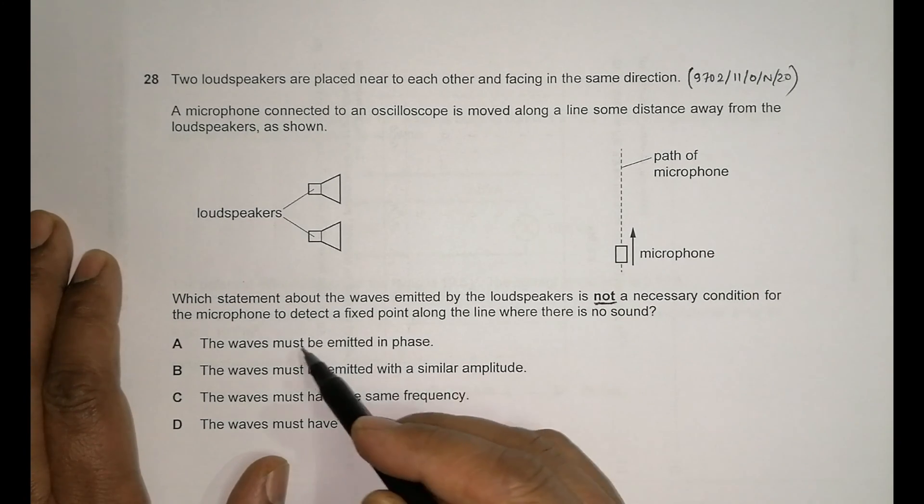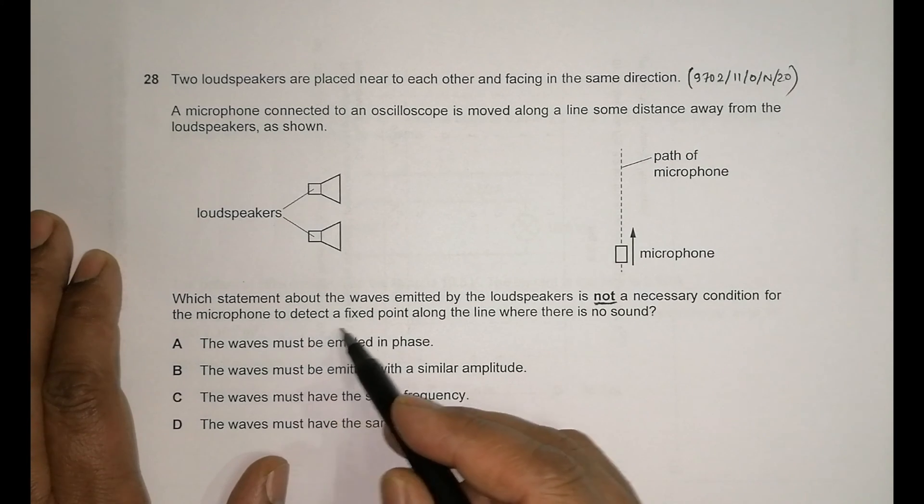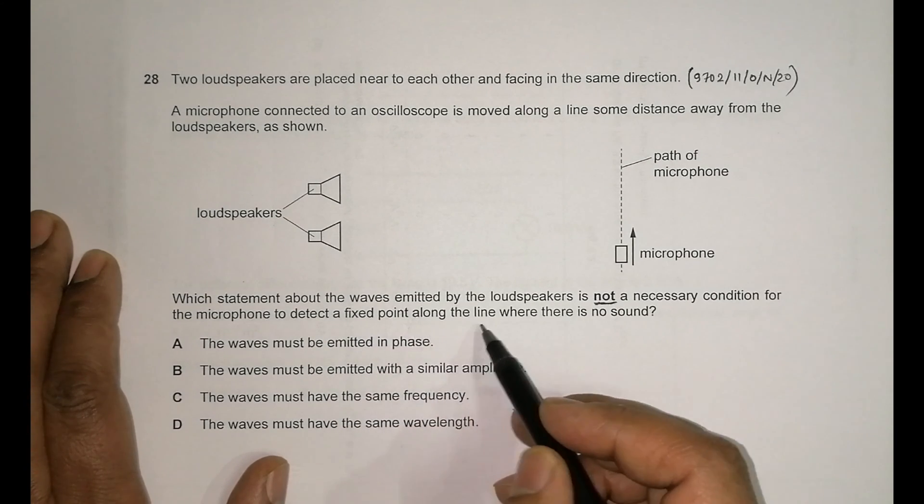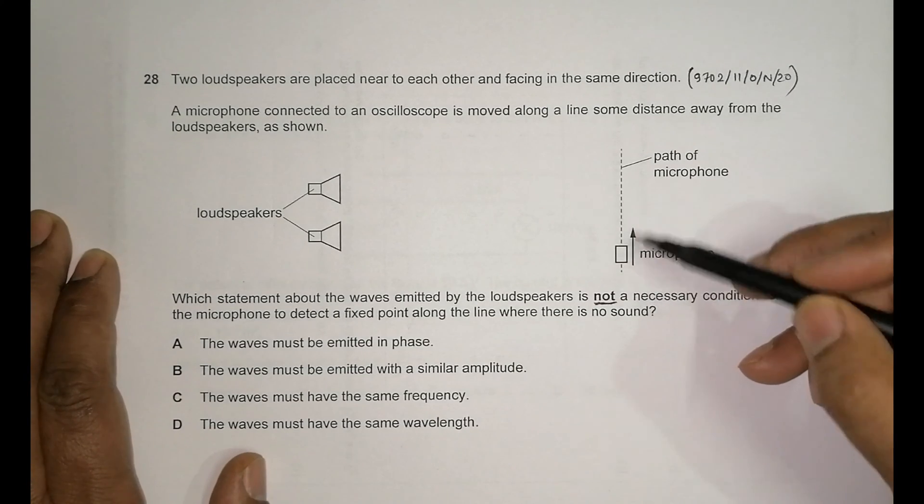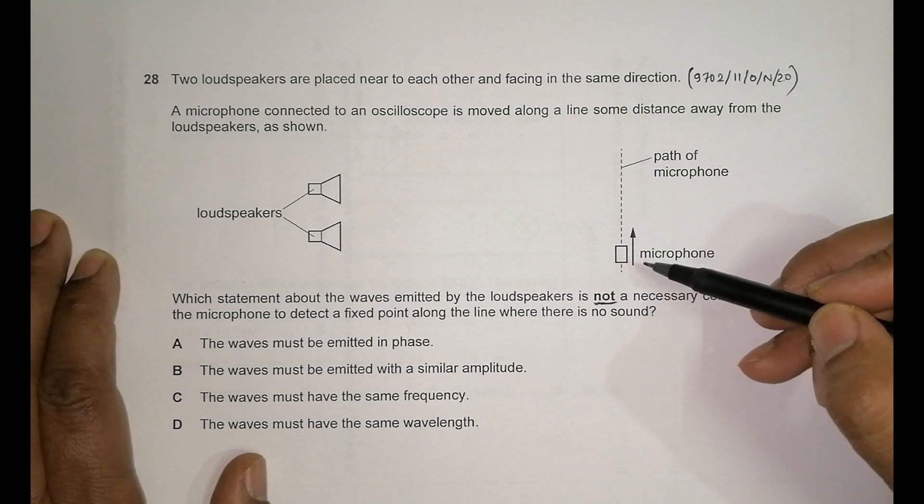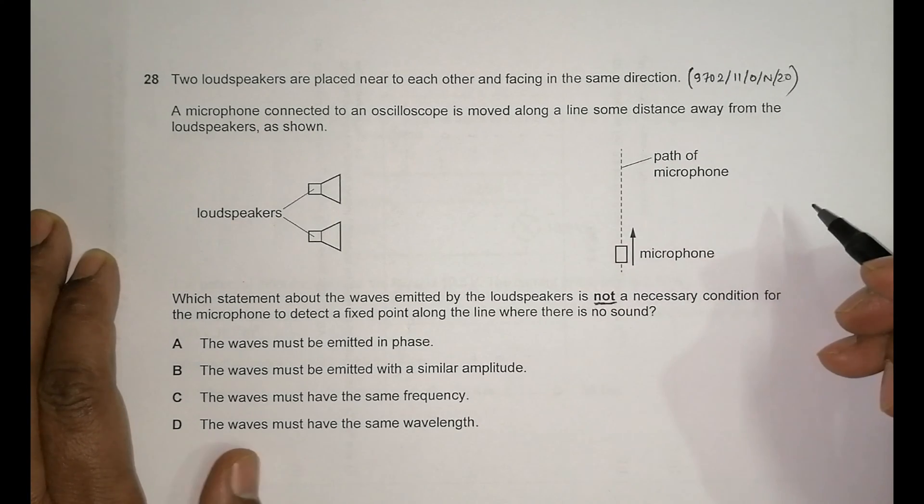Here, a necessary condition for the microphone to detect a fixed point along the line where there is no sound. So that means we have to detect a position of no sound here and we have to say which one is not the necessary condition.